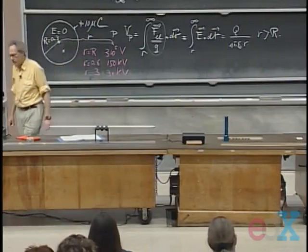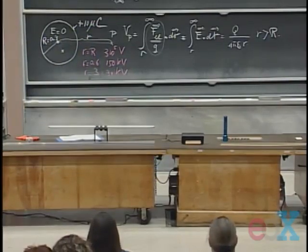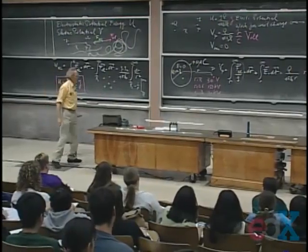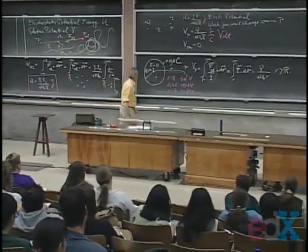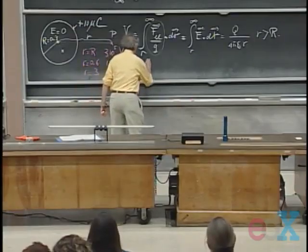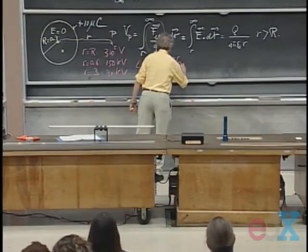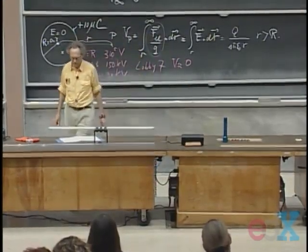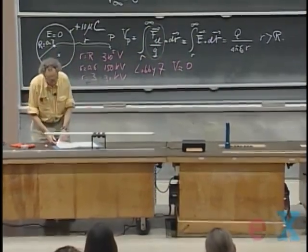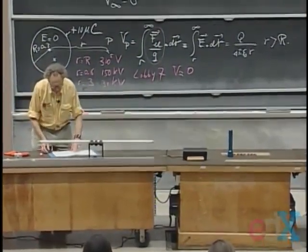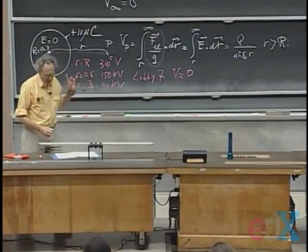And if you go to infinity, which for all practical purposes would be lobby seven, if you go to lobby seven, then the potential for all practical purposes is about zero. Because r is so large that there is no potential left.